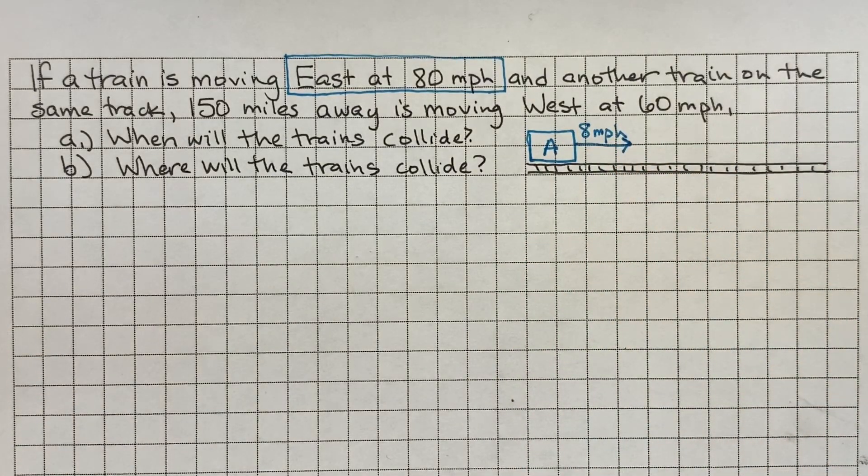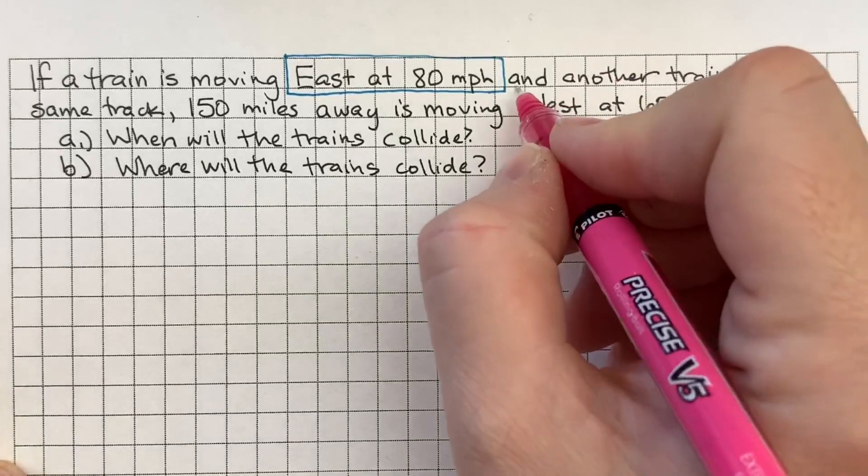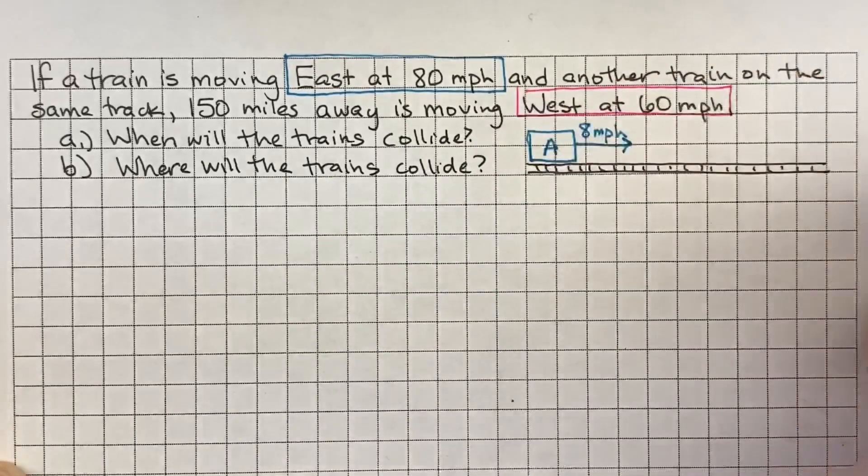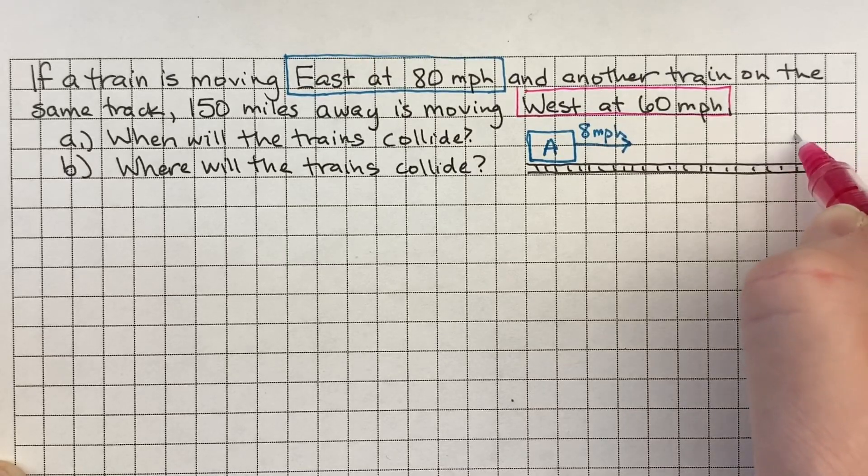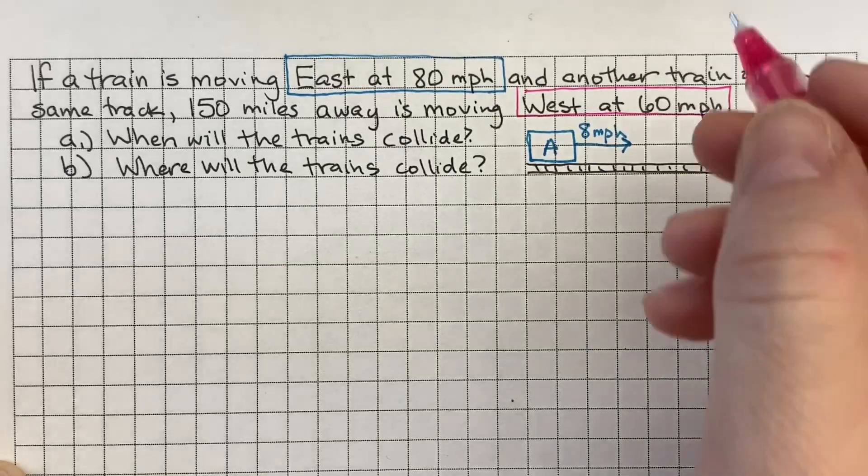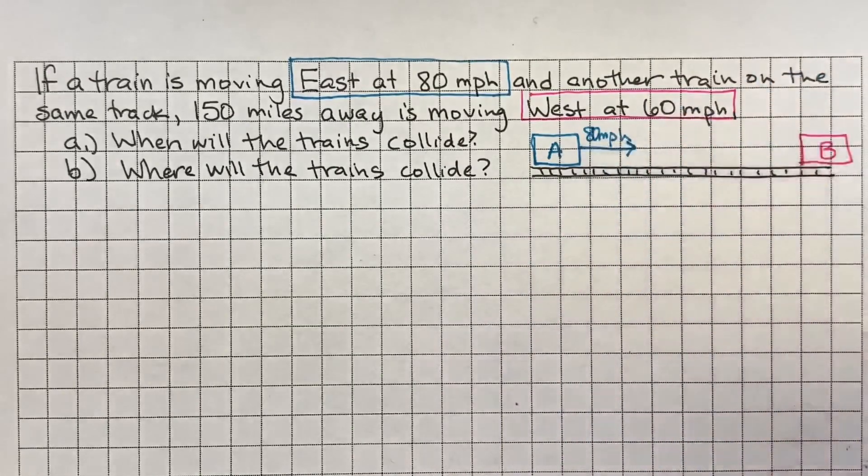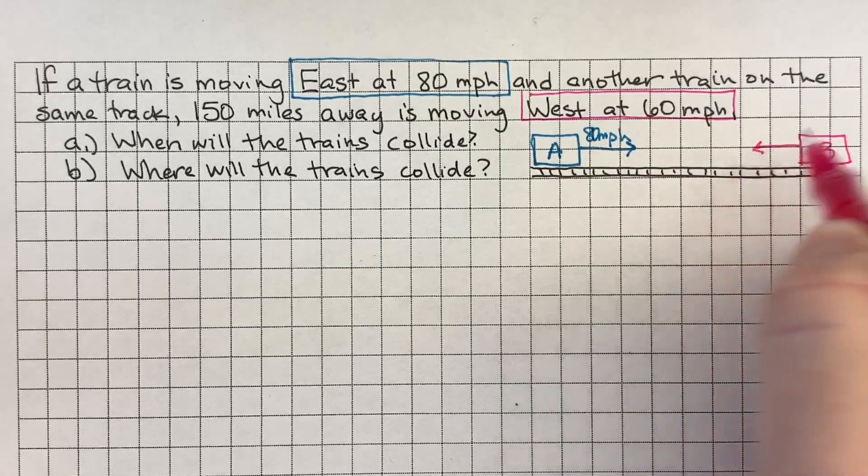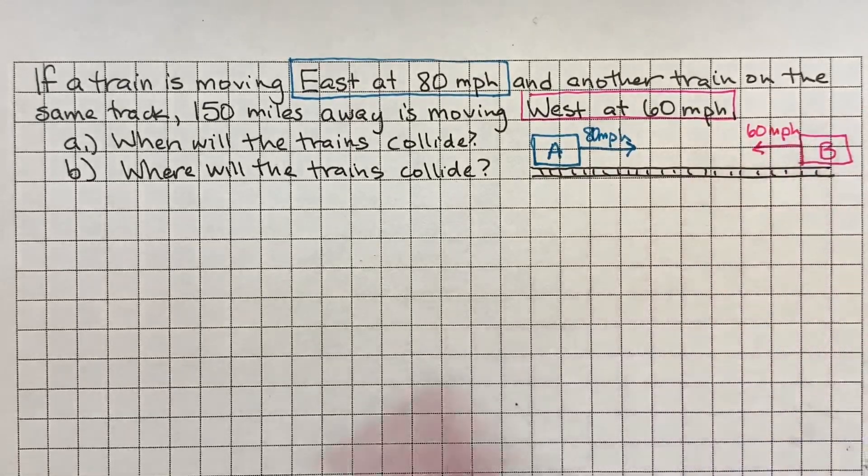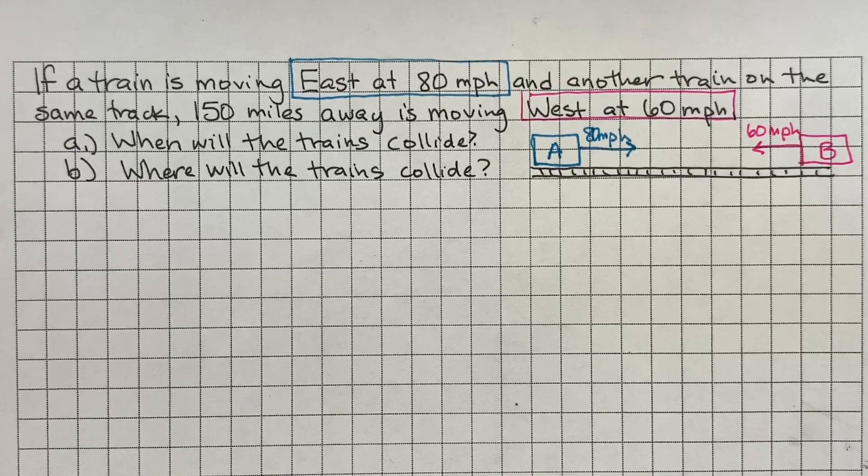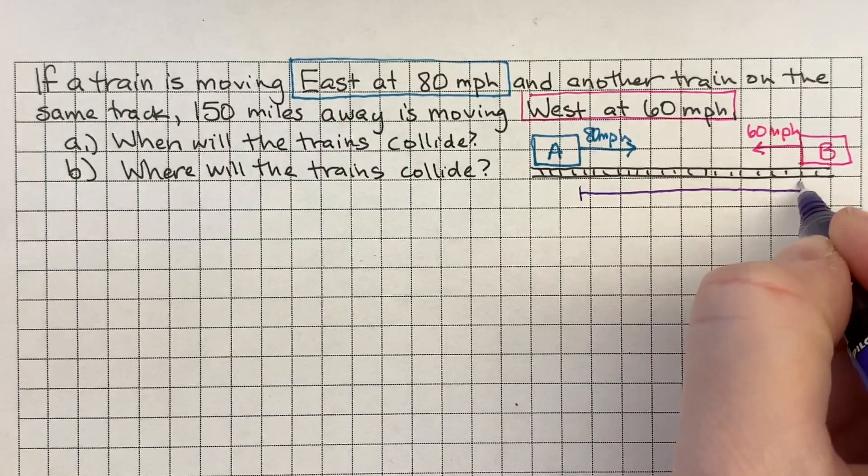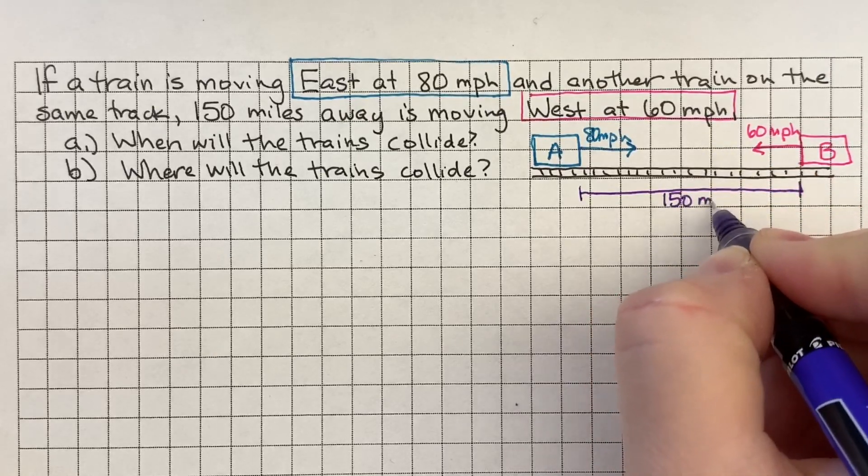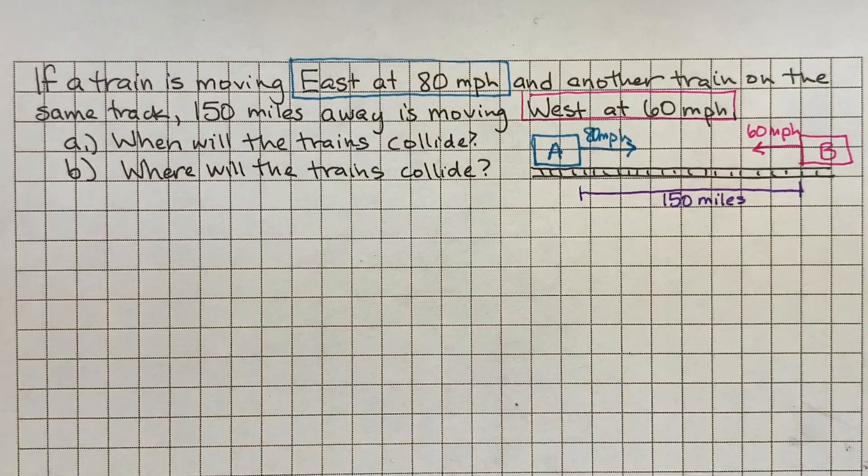And then let's make train B a different color. So I'll put that train right here with a slightly shorter arrow at 60 miles per hour. And we were told that the distance between train A and train B was 150 miles. Okay, so that's a picture of what we need to figure out.